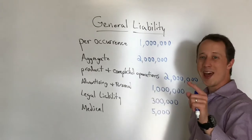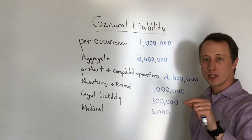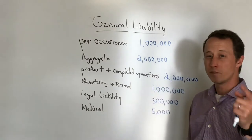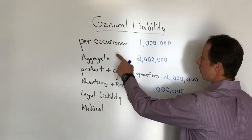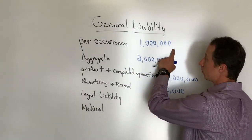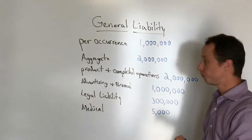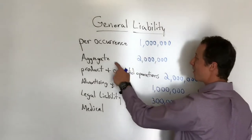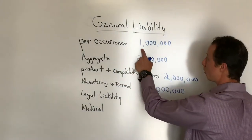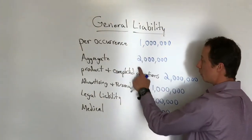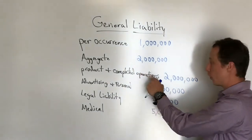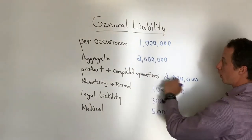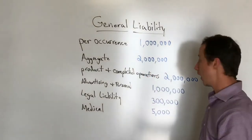Per occurrence — so if you have a claim that is liability related, this could be someone coming into your location, slipping and falling — per occurrence, one million dollars. The policy is going to have a per occurrence limit and then it's going to have an aggregate limit: the most it will pay out for any one event, and the most it's going to pay out in any policy year. What I recommend is one million per occurrence with an aggregate of two million dollars.